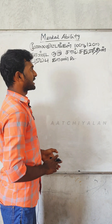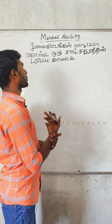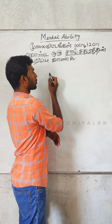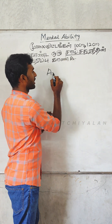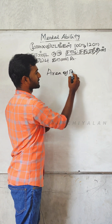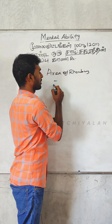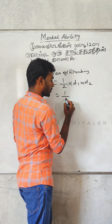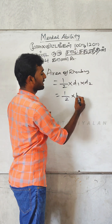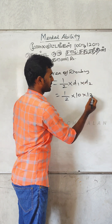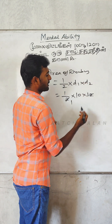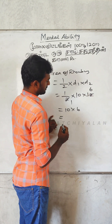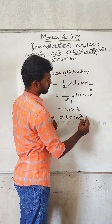We can see a size of 10. Area equals ½ into D1 into D2. So ½ — D1 is 10, D2 diagonal 2 is 12. 1 twos are 2, 6 twos are 12. 10 into 6 equals 60 centimetres square.